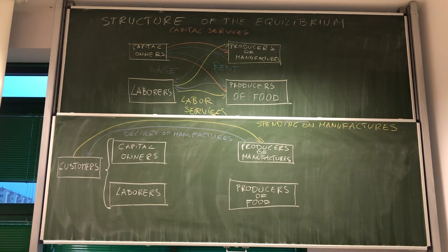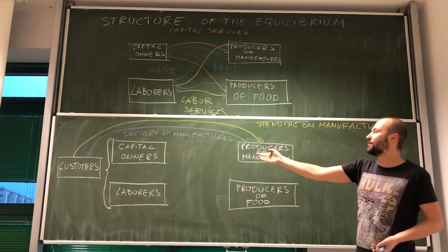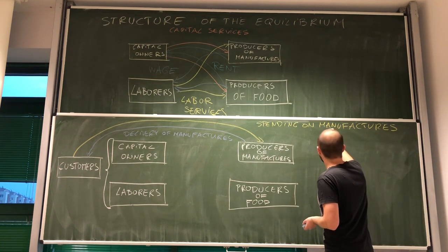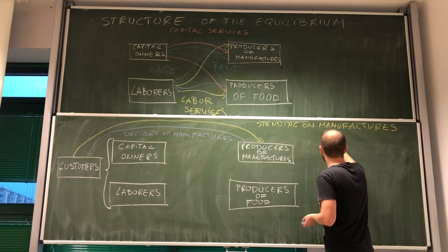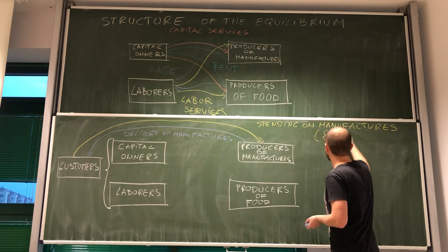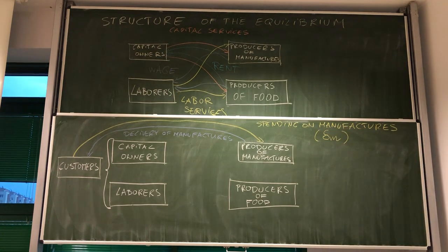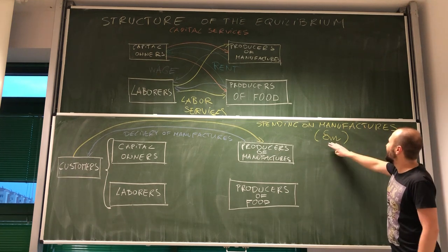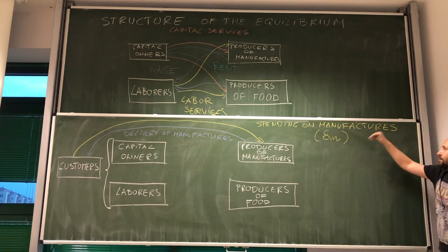Actually, at this moment, we can't even tell how much out of their income the customers will be spending on manufacturers. I hope you remember that this is the delta M, and this is the delta M that we take from utility function, because with homothetic preferences, it doesn't really matter what is the distribution of income in this economy, because each customer spends exactly the same share of income on manufacturers.